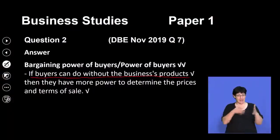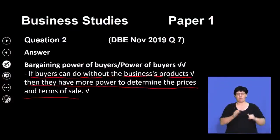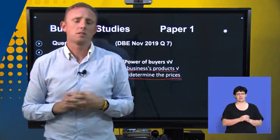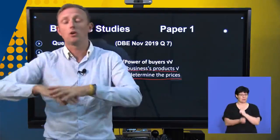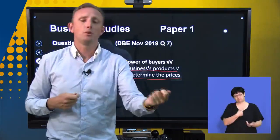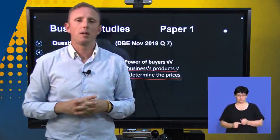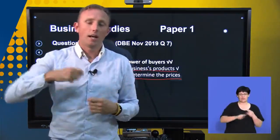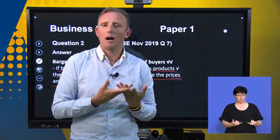If buyers can do without the business's products, they have more power to determine sale prices. During certain stages of lockdown, consumers went without products and now have that power — they can say they'd rather go buy from someone cheaper. In the rental market, renters now have a lot more power because more people are buying houses, leaving many empty homes that need to be rented, so rental prices are going down.